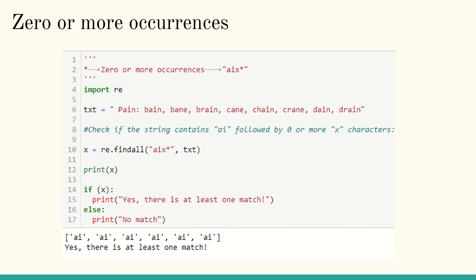The first thing we are going to do is find zero or more occurrences. An example: the text is 'pain bane bane brain cane chain crane dain drain'. What I need to find out is whether the string contains 'ai' followed by zero or more characters. Zero or more means it can be zero, one, two, or more occurrences. The find-all will search for 'ai' followed by 'n'.